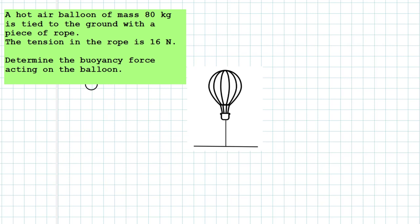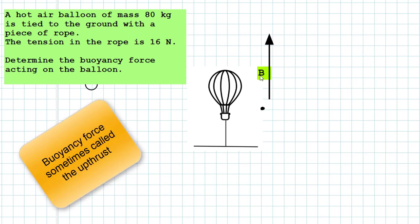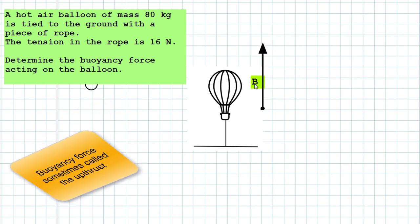To solve this problem, the first thing we do is draw a representation of the balloon by making a small dot. Then we put in the forces in the form of arrows, or vectors as we call them. The first force is the force acting upwards, which is called the buoyancy force, and we give that the letter B. So the buoyancy force is acting upwards like that.